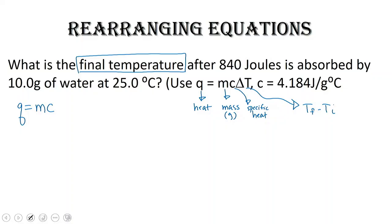So we've got MC and delta T is T final minus T initial. We've got to get T final all by itself. Let's do this step by step. If I divide both sides by MC, I can cancel out MC on the right-hand side. And I end up with Q over MC is equal to T final minus T initial.